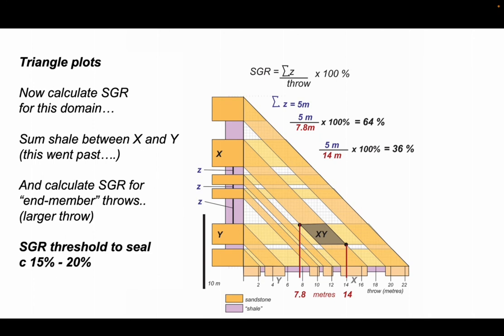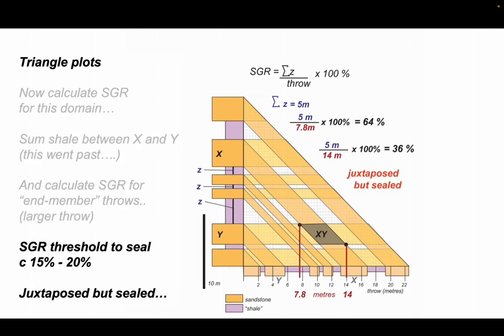Now a shale gouge ratio in excess of about 15 or 20% means that the fault is likely to be sealing. So in our situation here, even though sandstone X and Y are juxtaposed, there's very unlikely to be fluid movement between these two sandstone units, because the fault that has done the juxtaposition is likely to be sealing.